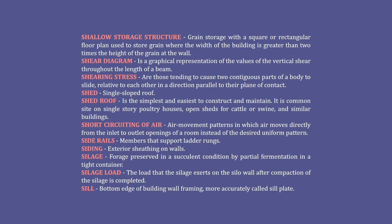Shear diagram: a graphical representation of the values of the vertical shear throughout the length of the beam. Shearing stress: forces tending to cause two contiguous parts of a body to slide relative to each other in a direction parallel to their plane of contact. Shed: single sloped roof. Shed roof: the simplest and easiest to construct and maintain — common on single-story poultry houses, open sheds for cattle or swine, and similar buildings.